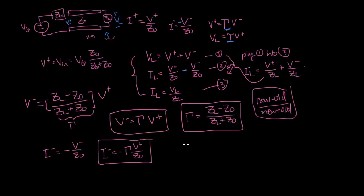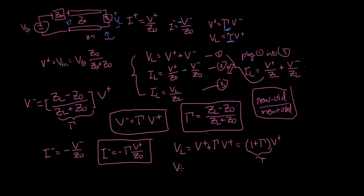Substituting these quantities back into equation one, VL equals V plus plus V minus. Since V minus equals gamma times V plus, that gives VL equals one plus gamma times V plus. This is our transmission coefficient tau, where tau is simply one plus gamma.